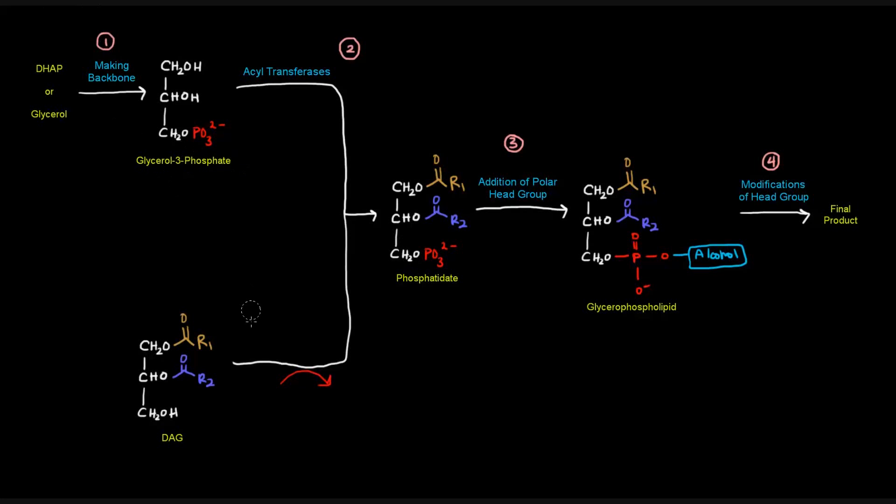We add a kinase, and we basically invest some ATP here to give us phosphatidate from diacylglycerol. And then the steps that follow can occur as well to give us our glycerophospholipid. And modifications, of course, can give us our final product if necessary.